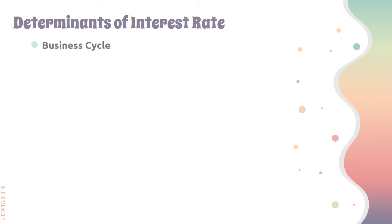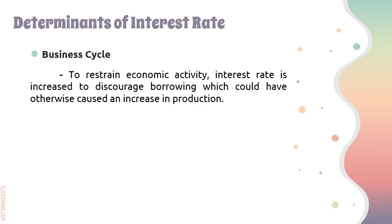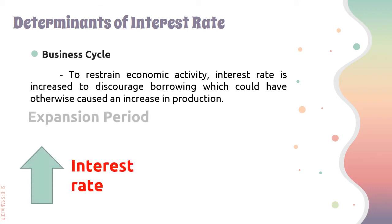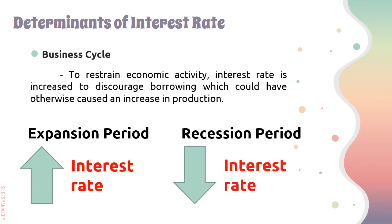Lastly, we have the business cycle. To restrain economic activity, interest rate is increased to discourage borrowing, which could have otherwise caused an increase in production — so interest rate follows the business cycle. Interest rate rises during the expansion phase and falls during the period of recession. During expansion, there is an increase in the level of economic activity and goods and services available. During recession, there is a period of decline, slowdown, or a massive contraction in general economic activity. This is true for short-term interest rates: demand for funds grows during expansion, pushing rates up, and falls during recession.